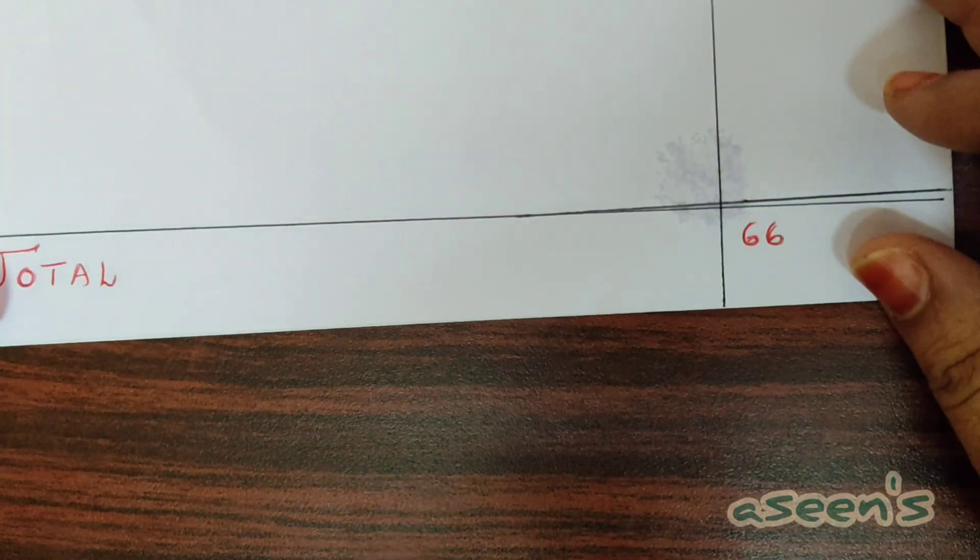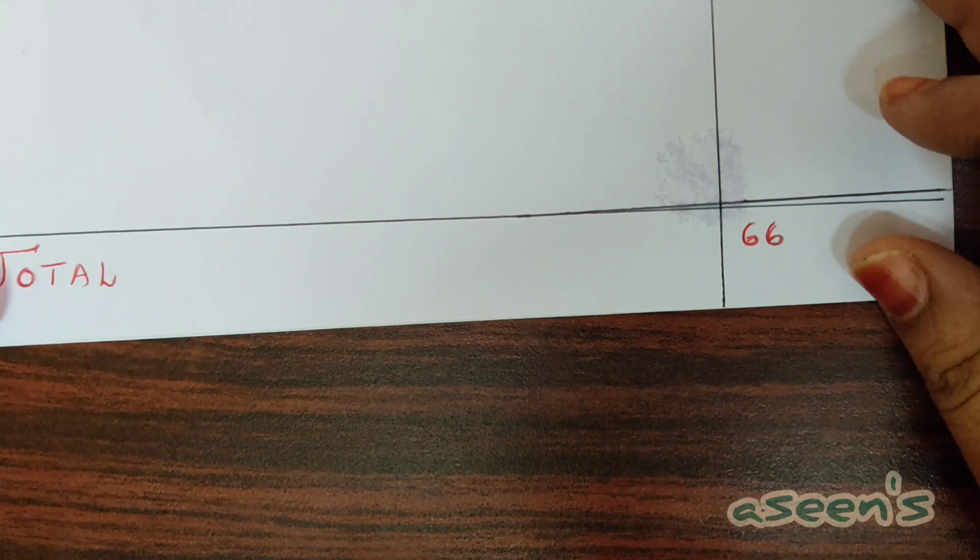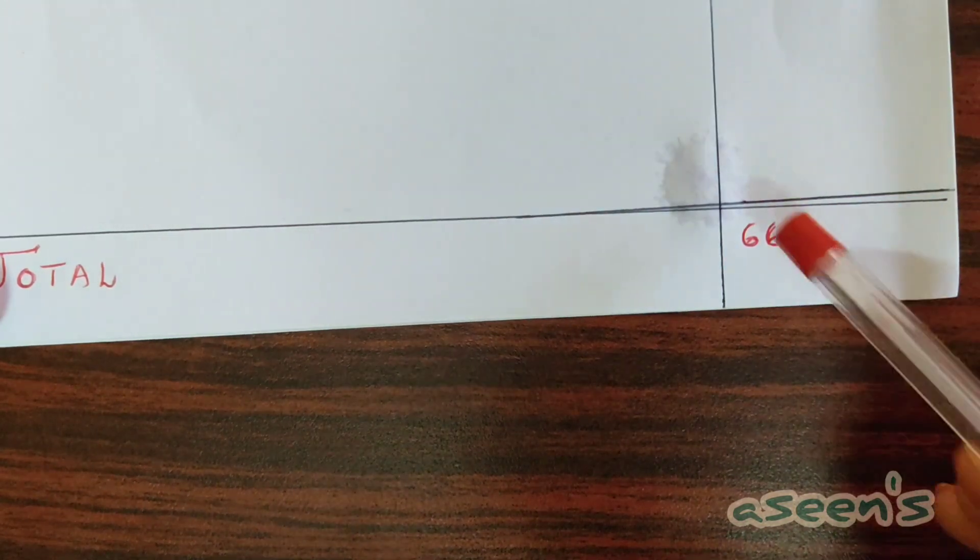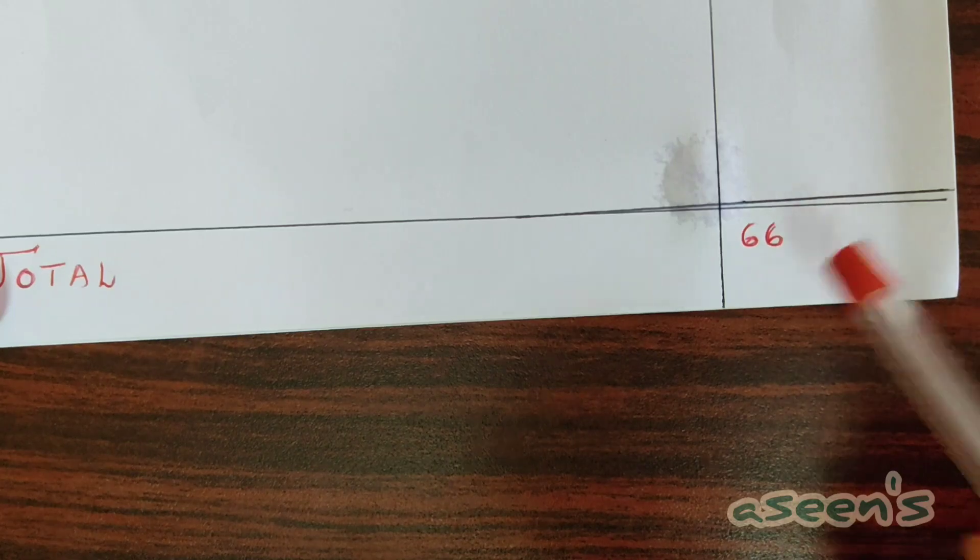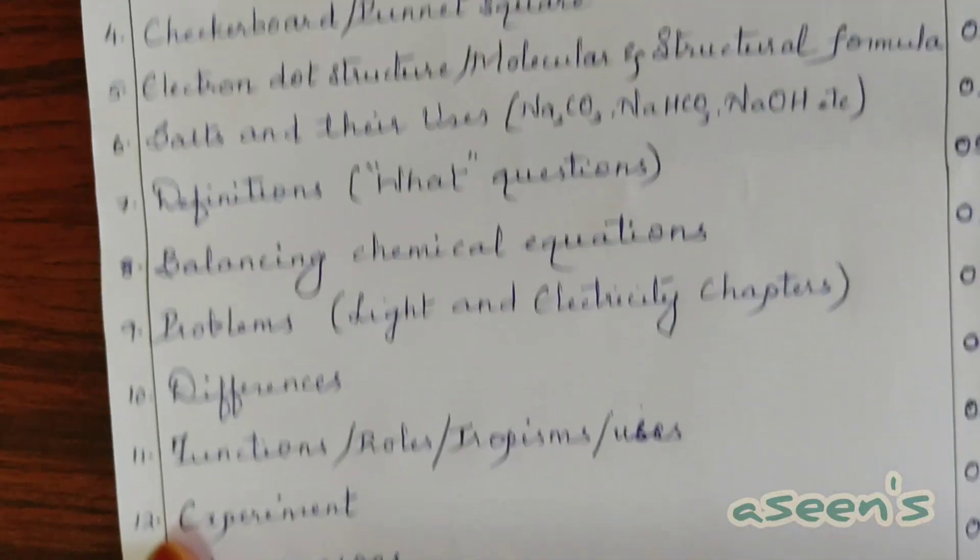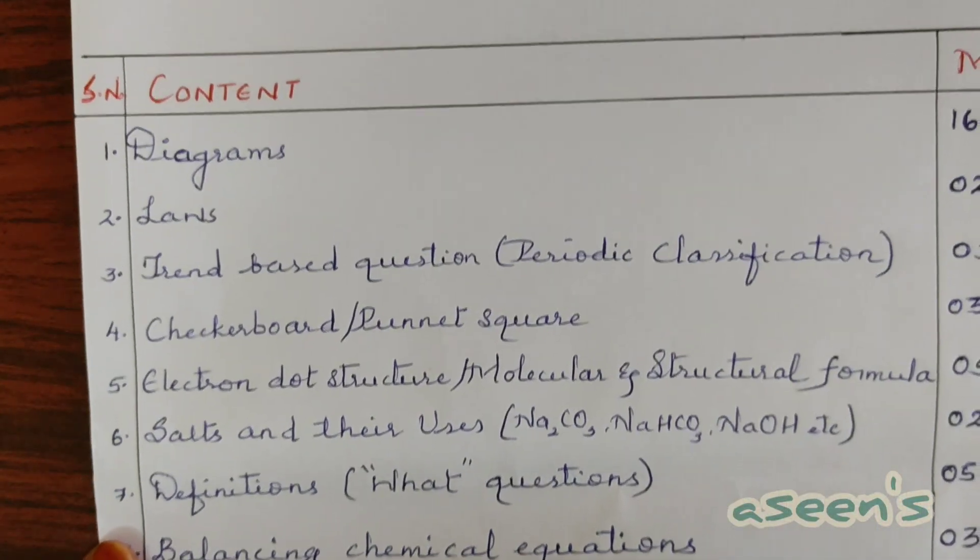All together, if you are perfect with all this, I can guarantee you a total of 66 marks. Let's square it off and make it 60. At least 60 marks you can definitely get if you are perfect with all of these concepts.